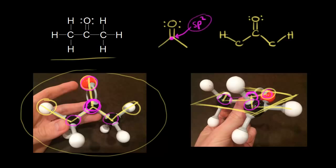Now let's look at the other carbons. The carbon on the left is sp3 hybridized, which means tetrahedral geometry. We have these two bonds in the plane of the page, and then this hydrogen is coming out at us in space, and this other hydrogen is going away from us in space. On our three-dimensional bond line structure, we draw a wedge for the hydrogen coming out at us and a dash for the hydrogen going away from us.